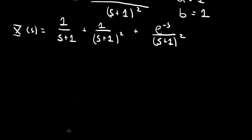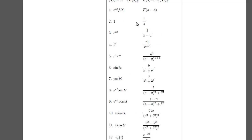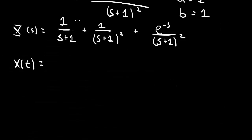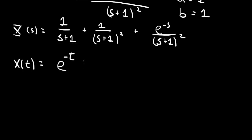Now we can inverse Laplace transform this to find x of t. Going to the table: 1 over s plus 1 transforms to e to the minus t. For 1 over s plus 1 squared, we use line 5 with n equals 1 and a equals minus 1, so 1 over s plus 1 squared transforms to t times e to the minus t. Straightforward application of the table.